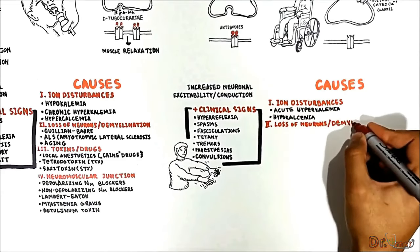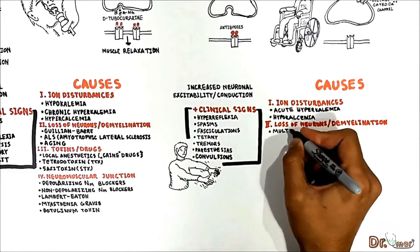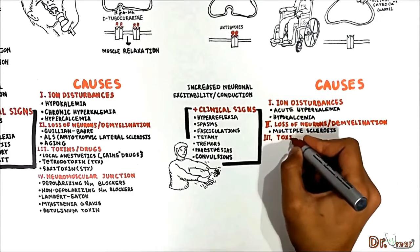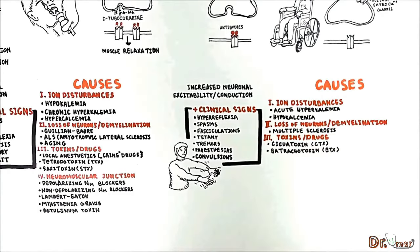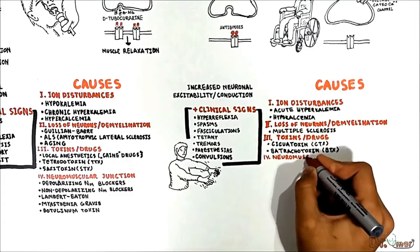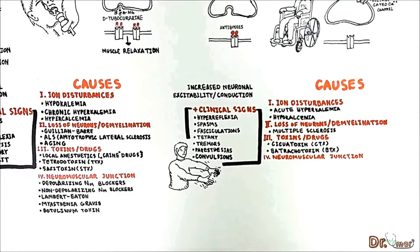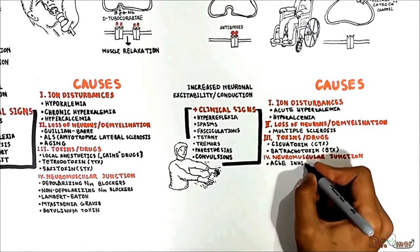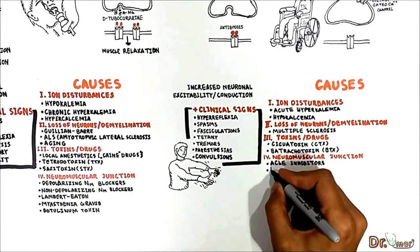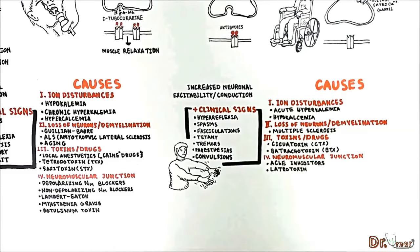Additional causes of increased excitability include loss of neurons and demyelination, as in the case of multiple sclerosis. Third, toxins like ciguatoxin and batrachotoxin. Neuromuscular junction disorders, drugs, and toxins also increase excitability at the neuromuscular junction — causes include acetylcholinesterase inhibitors and latrotoxin.